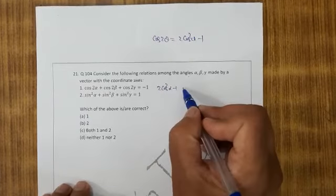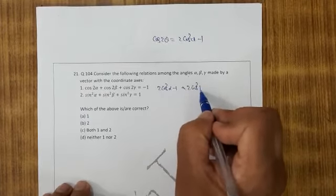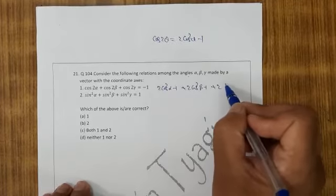2 cos square alpha minus 1, 2 cos square beta minus 1, and 2 cos square gamma minus 1.